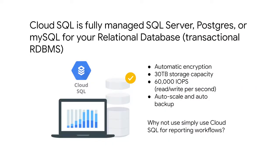If you have SQL Server, MySQL, or Postgres as your relational database, you can migrate it to Cloud SQL, which is Google Cloud's fully managed relational database solution. Cloud SQL delivers high performance and scalability with terabytes of storage capacity, tens of thousands of IOPS, and 400-500 gigs of RAM per instance. You can take advantage of storage auto-scale to handle growing database needs with zero downtime.